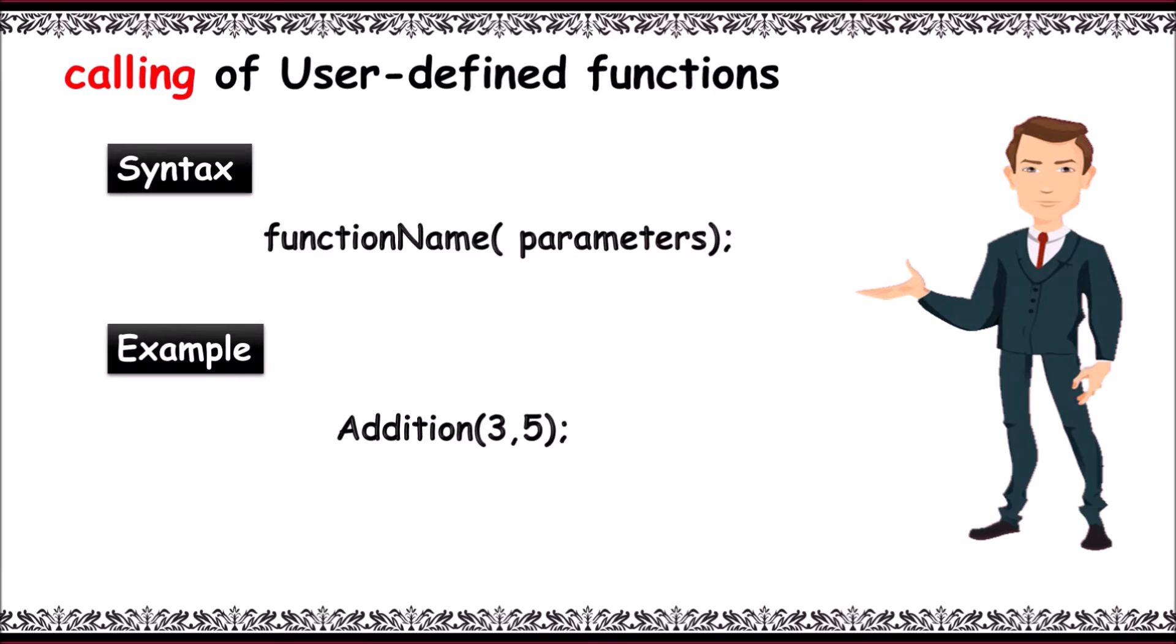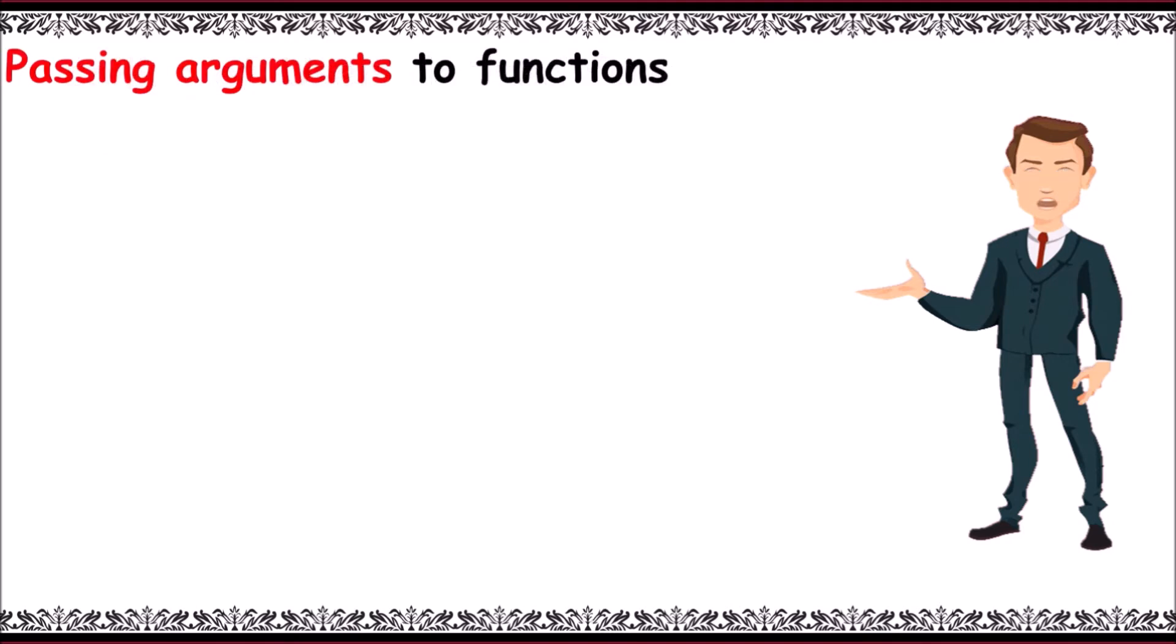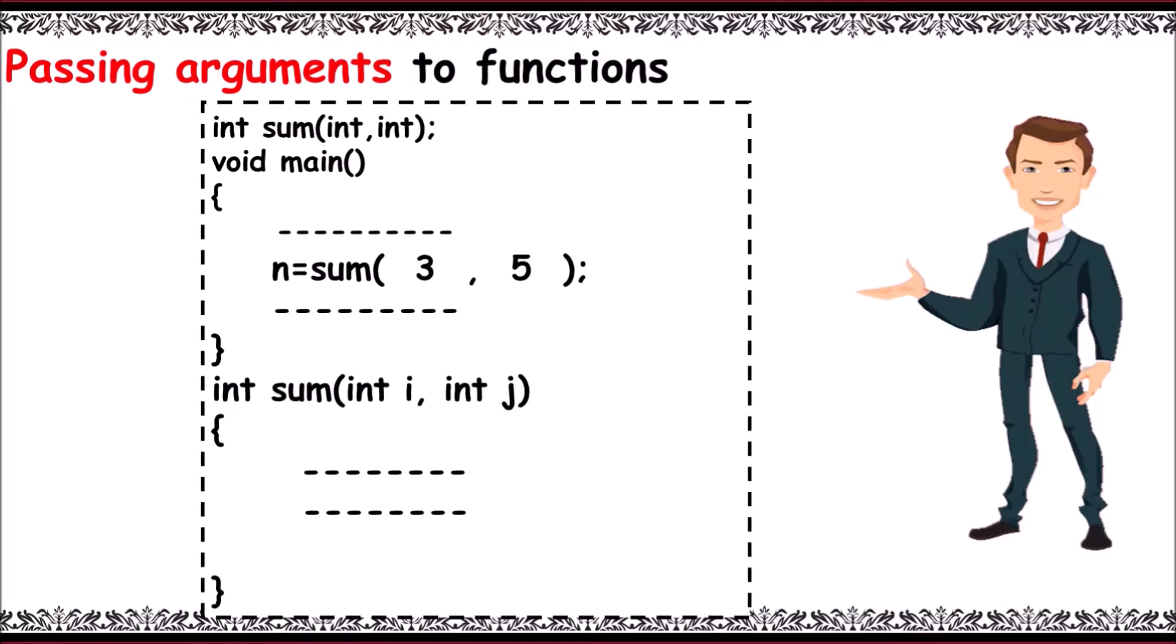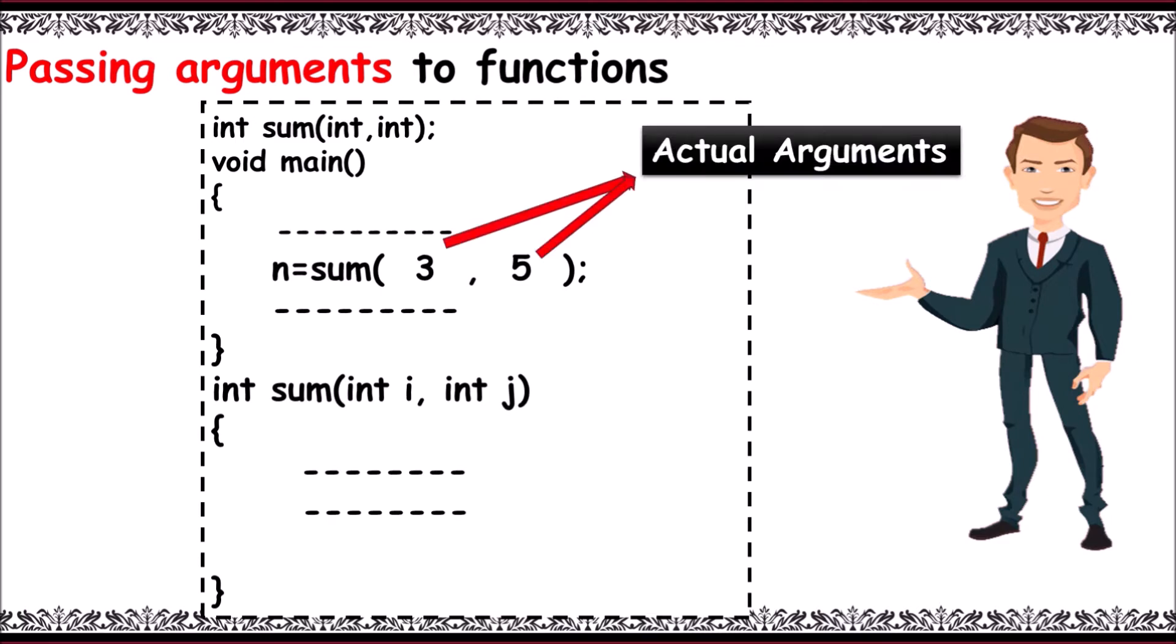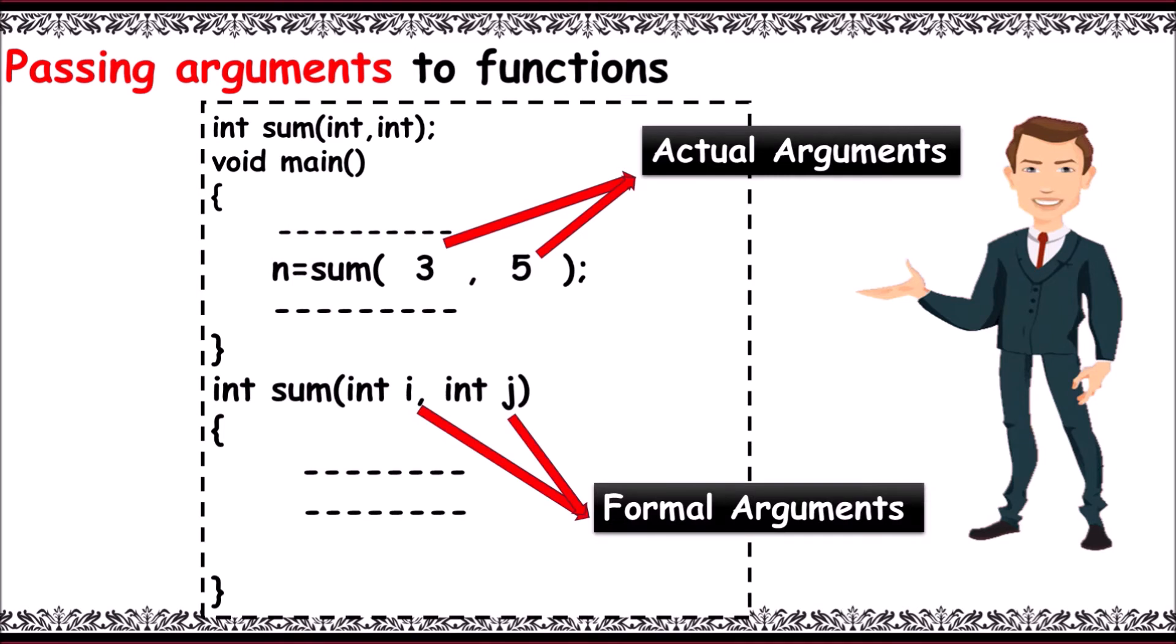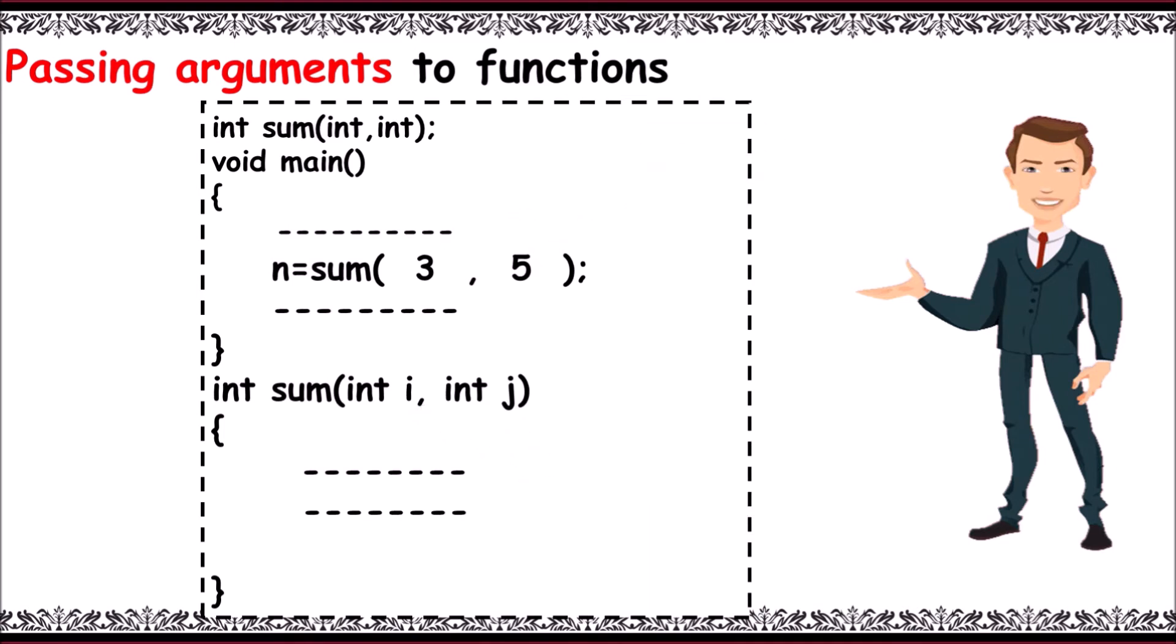Now passing arguments to functions. Here, arguments refer to variable or value passed to a function. The arguments inside the function call are called actual arguments, and the arguments inside the function definition we call formal arguments. Here we mention its data type. Now 3 is passed and stored in int i, and 5 is stored in int j.